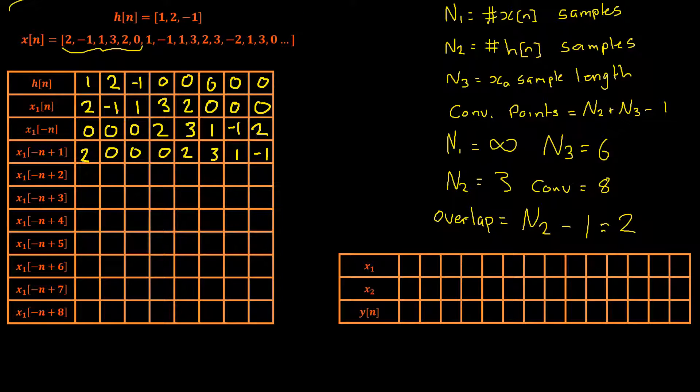Just as we did with the correlation we simply multiply down the rows and then add them together. We have 1 times 2 which is 2, then we have 2 times 0 which is 0, negative 1 times 0 is 0, and then the rest of these terms are all 0. So we're just left with 2. So our first output will be a 2.